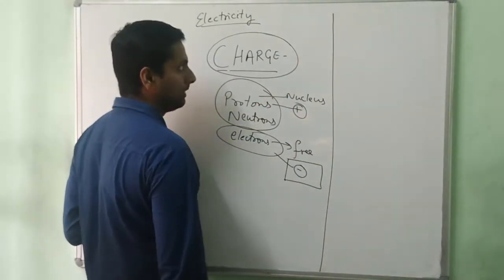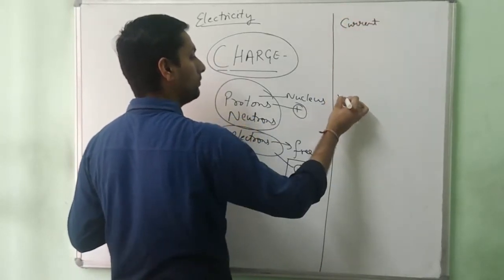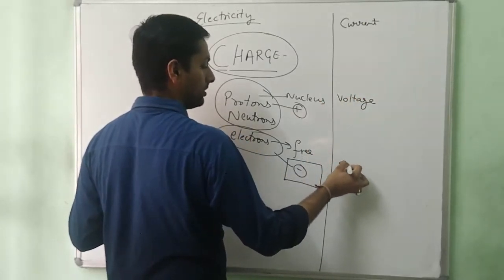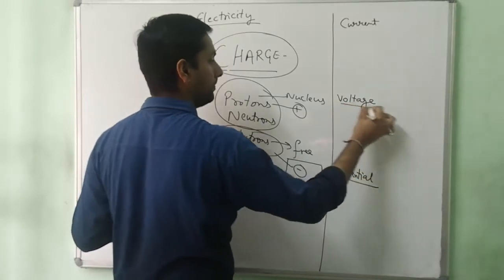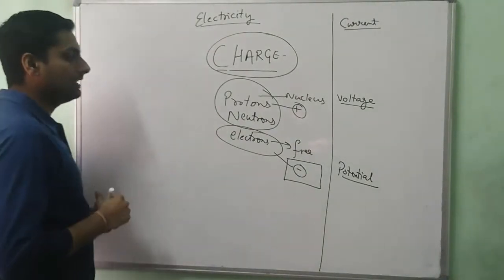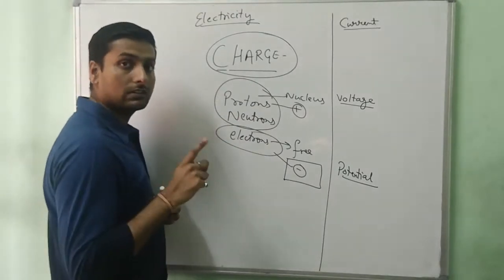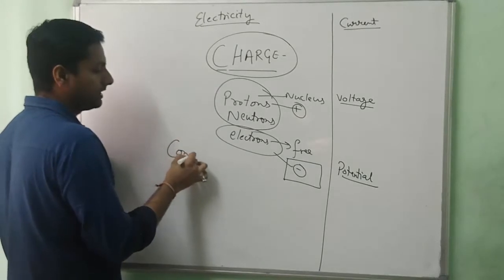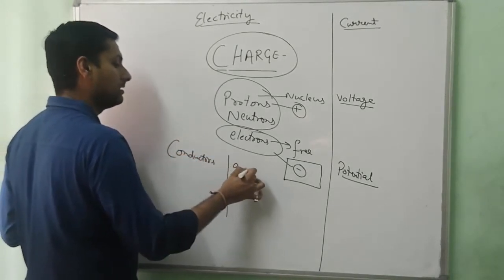We need to learn about current, voltage, and potential. The basic question is: in which materials does this charge exist and in which does it not? There are two kinds of materials — one is conductors and the other is insulators.